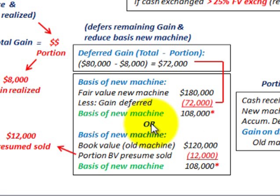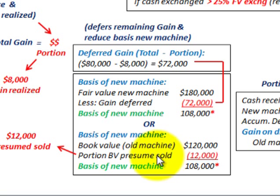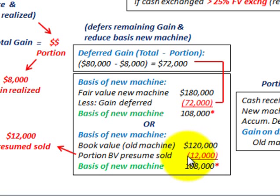Alternatively, for the basis of the new machine, we take the book value of the old machine at $120,000 and subtract out the portion of the book value presumed to be sold, which is $12,000. The book value of the old machine less the portion presumed to be sold gives us a basis of the new machine of $108,000 — the same comparable amount either way.